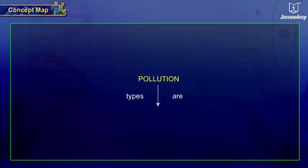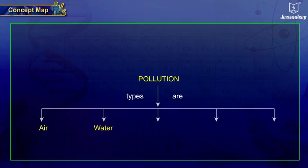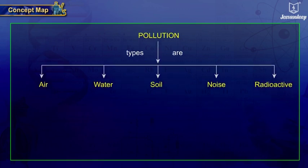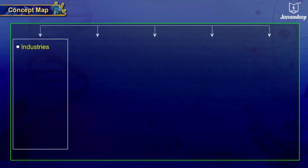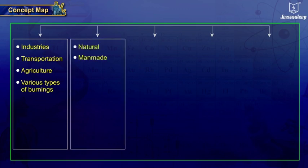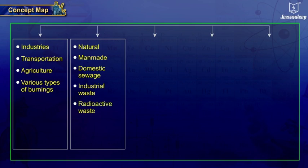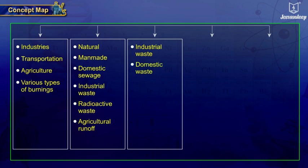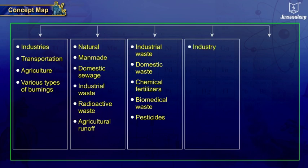Concept map: Pollution can be of five types — air pollution, water pollution, soil pollution, noise pollution, and radioactive pollution. Air pollution can be caused by industries, transportation, agriculture, and various types of burning. Water pollution can be caused by natural or man-made activities including domestic sewage, industrial waste, radioactive waste, and agricultural runoff. Soil pollution can be caused by industrial waste, domestic sewage, chemical fertilizers, biomedical waste, and pesticides.